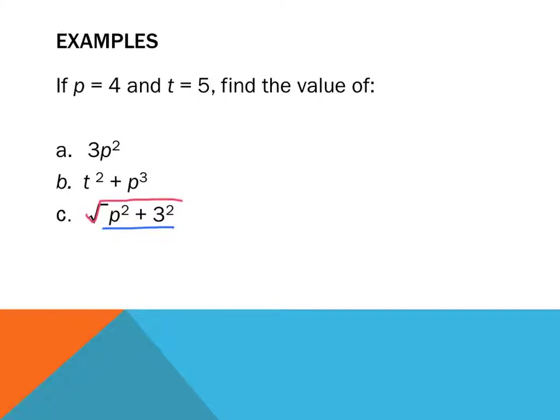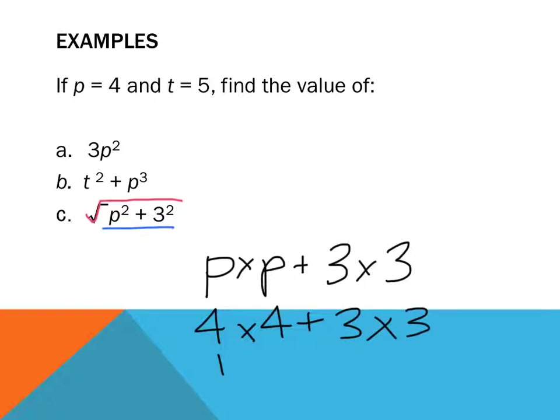So, I've got p squared. So, p times p. p multiplied by itself twice. Plus, 3 squared. So, 3 times 3. p times p. p equals 4. Let's sub it in. 4 times 4 plus 3 times 3. 4 times 4 is 16. Plus, 3 times 3 is 9. 16 plus 9 is 25.